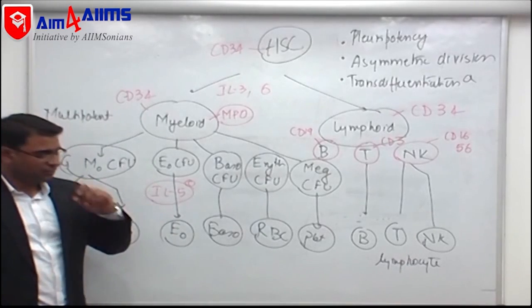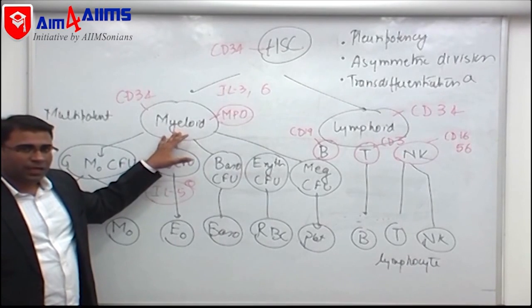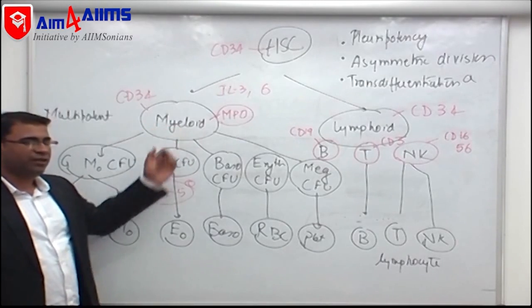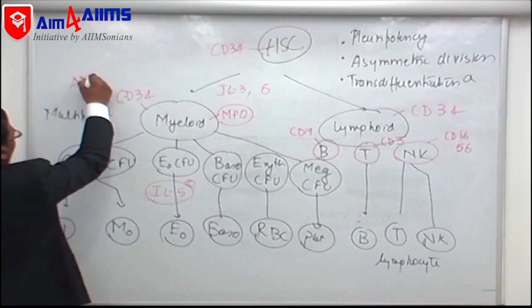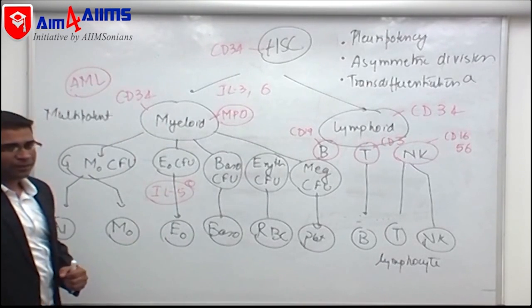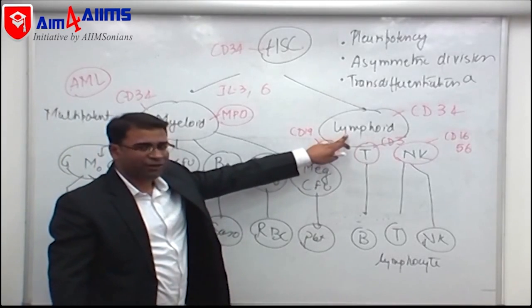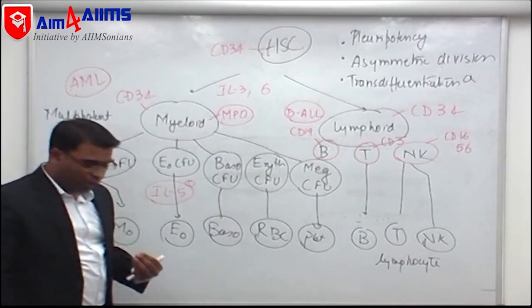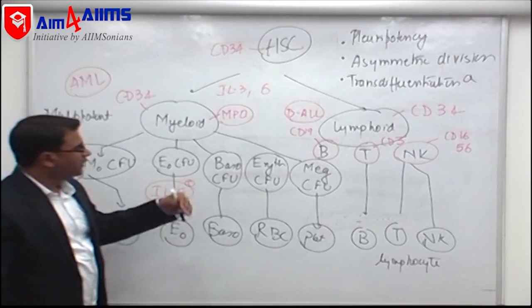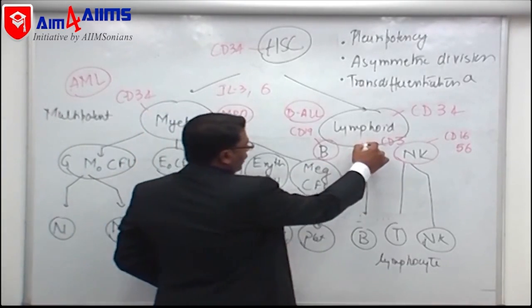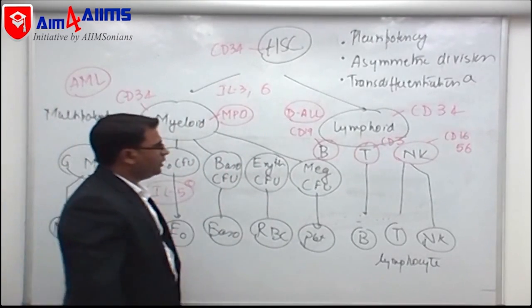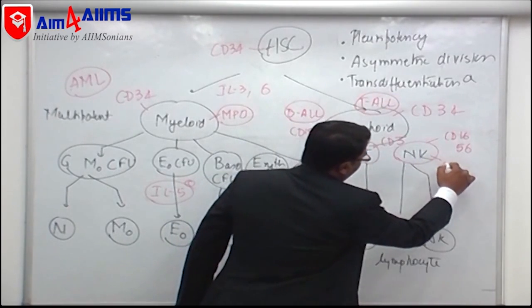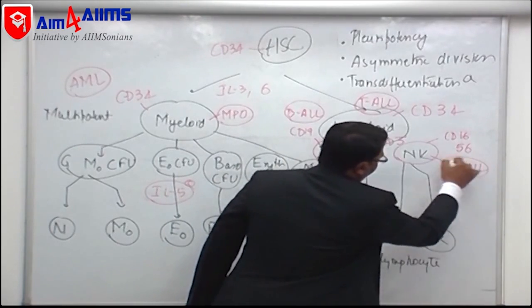Any hematopoietic neoplasm originating from an immature myeloid cell is labeled as Acute Myeloid Leukemia (AML). Any neoplasm originating from immature B-type lymphoid cells is called B-type Acute Lymphoblastic Leukemia (B-ALL). Any neoplasm from immature T-type cells is T-ALL, and from NK-type immature cells is NK-type acute lymphoblastic leukemia.